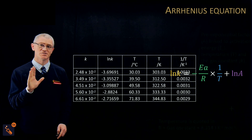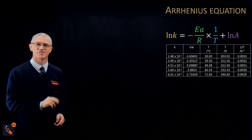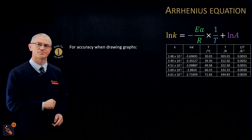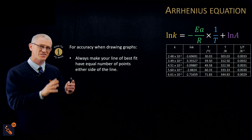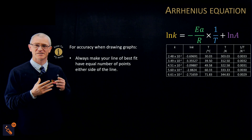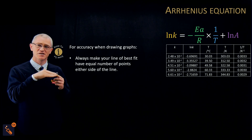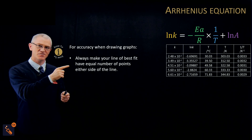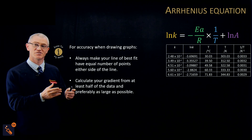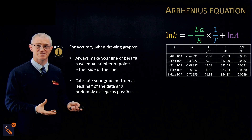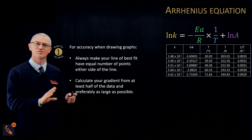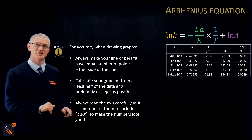Now let's go through some tips for drawing the graph — I want you to actually draw the graph, not just watch. For accuracy, when drawing the line of best fit, aim for roughly equal numbers of data points on each side. Everyone's line will be slightly different, so answers will fall within a range. Calculate the gradient from at least half the data — ideally all of it — and do it from the line, not from the crosses. Also, read the axes carefully and look out for ×10⁻³ notation, which many people miss.